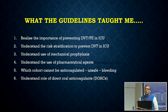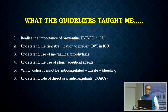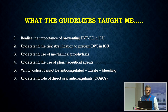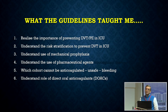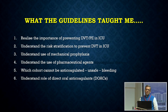By reading guidelines, what does it teach us? It teaches several important issues. First, realize the importance of preventing DVT and pulmonary embolism in the ICU, which is a hotbed for such events. Then understand the risk stratification for prevention — who should be given and who should not be given prophylaxis. Understand the use of both mechanical devices and pharmaceutical products available to prevent DVT-PE.